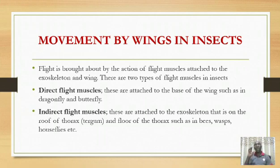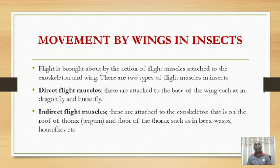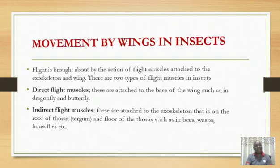Remember the requirements for locomotion — there must be muscles. Equally, there are flight muscles which are attached onto the skeleton of the wing — attached onto the outer part of the skeleton and the wing. Now these muscles are of two types: the direct flight muscles and the indirect flight muscles.